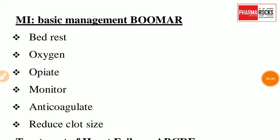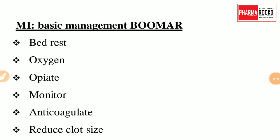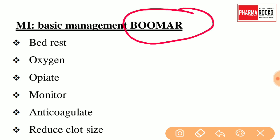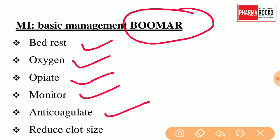The next trick is about the basic management of MI, Myocardial Infarction. The short form to remember is 'BOOMER'. B stands for Bedrest, O stands for Oxygen, then Drugs like Opiates, then proper Monitoring, Anticoagulation, and Reducing the Clot Size. This covers the basic management of Myocardial Infarction.